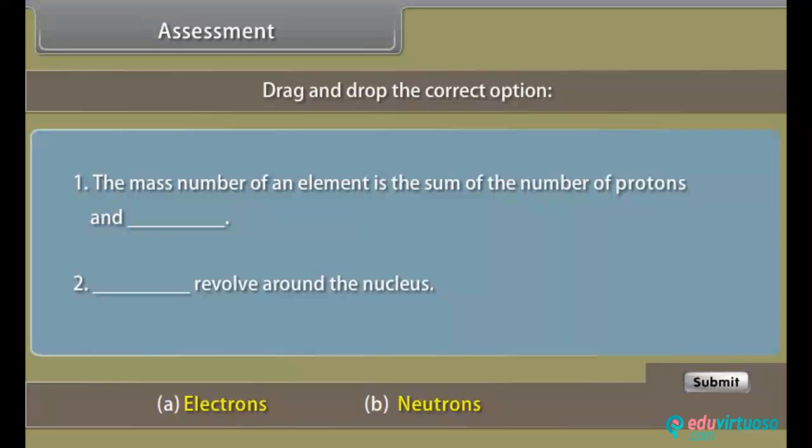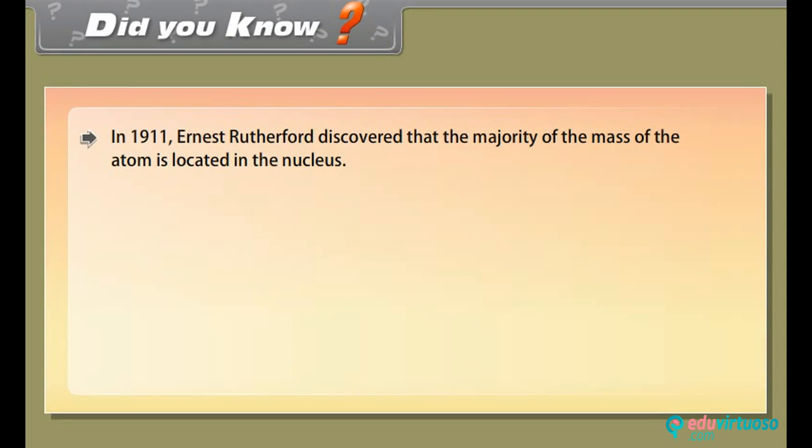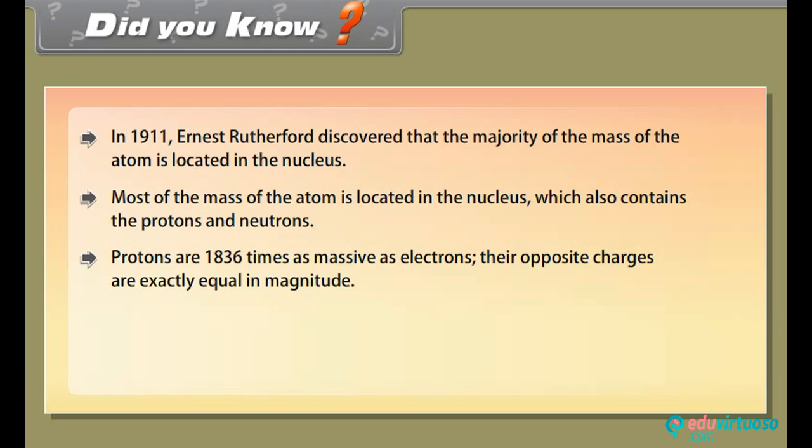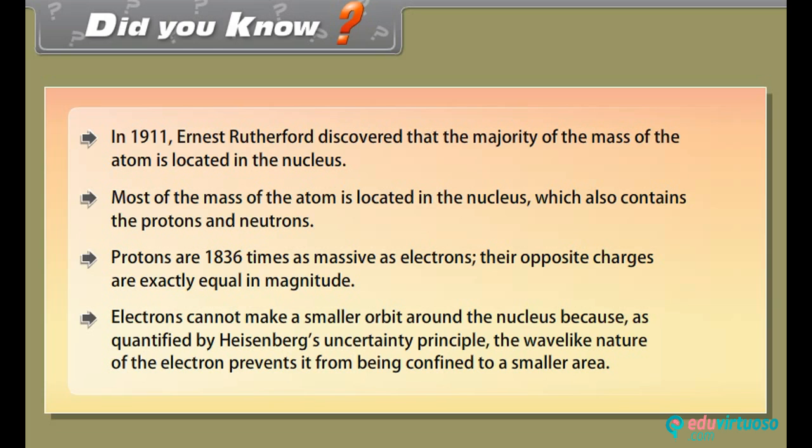Assessment. Before proceeding further let us know how much have you learned? Drag and drop the correct option. Did you know in 1911 Ernest Rutherford discovered that the majority of the mass of the atom is located in the nucleus. Most of the mass of the atom is located in the nucleus which also contains the protons and neutrons. Protons are 1836 times as massive as electrons. Their opposite charges are exactly equal in magnitude. Electrons cannot make a smaller orbit around the nucleus because as quantified by Heisenberg's uncertainty principle the wave-like nature of the electron prevents it from being confined to a smaller area.